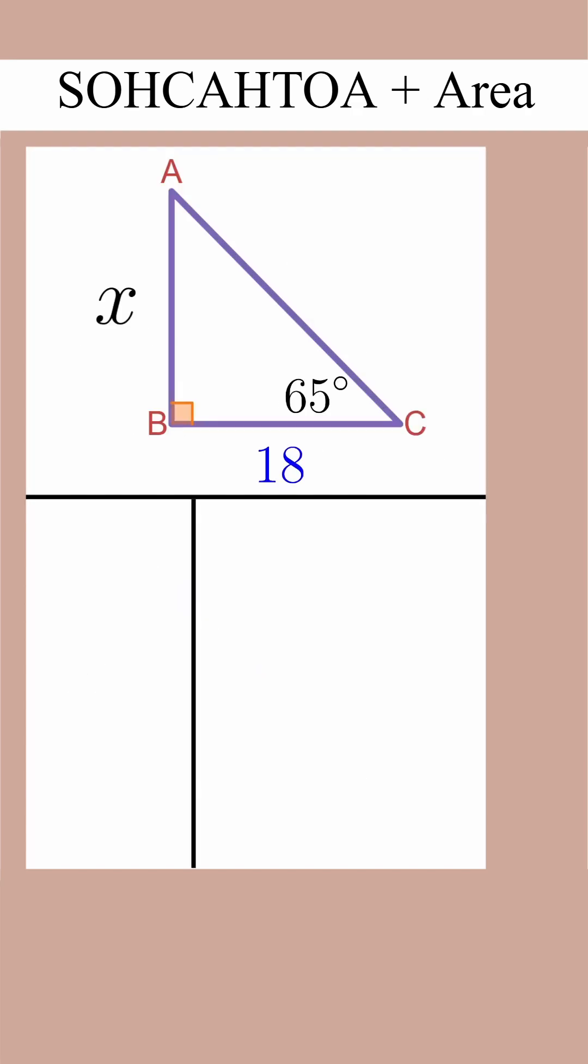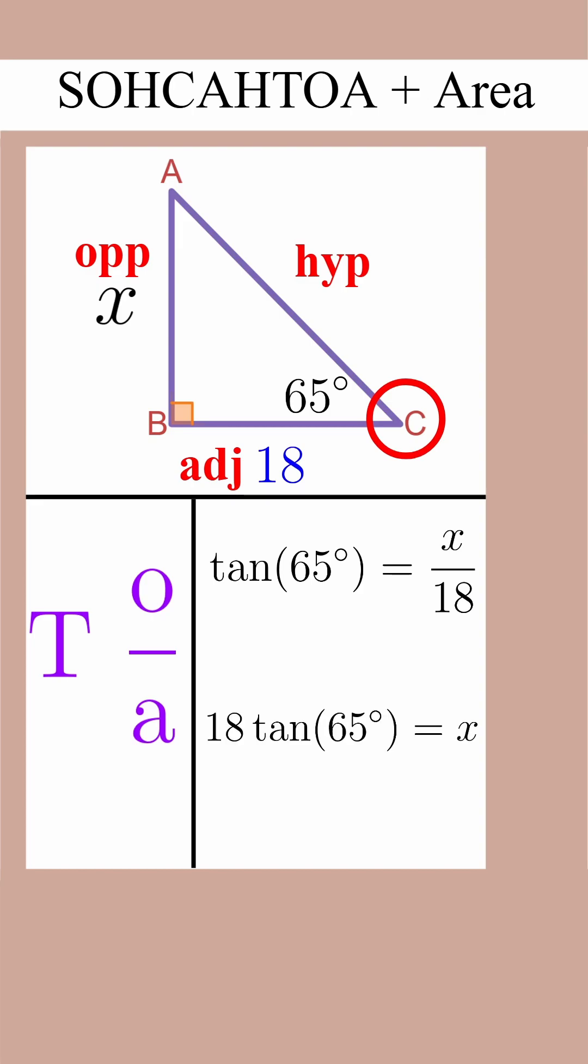Now we can circle the angle of interest, and then label the hypotenuse, the opposite, and the adjacent relevant to that angle. We want to relate opposite and adjacent, so we want to use TOA for tangent. Tangent is opposite over adjacent, so we can write tangent of 65 degrees equals X over 18. Multiplying both sides by 18 gives us X equals 18 tan of 65 degrees.